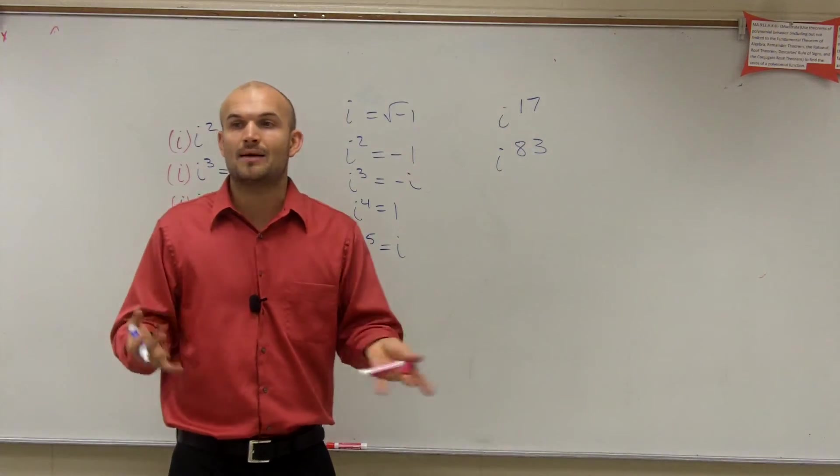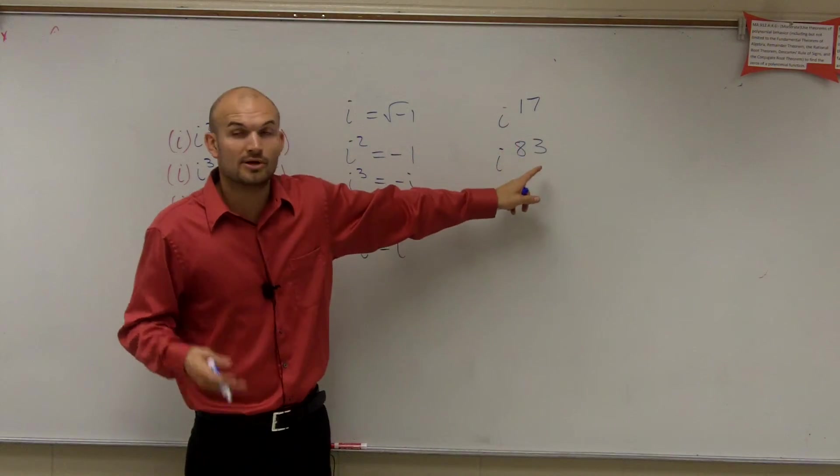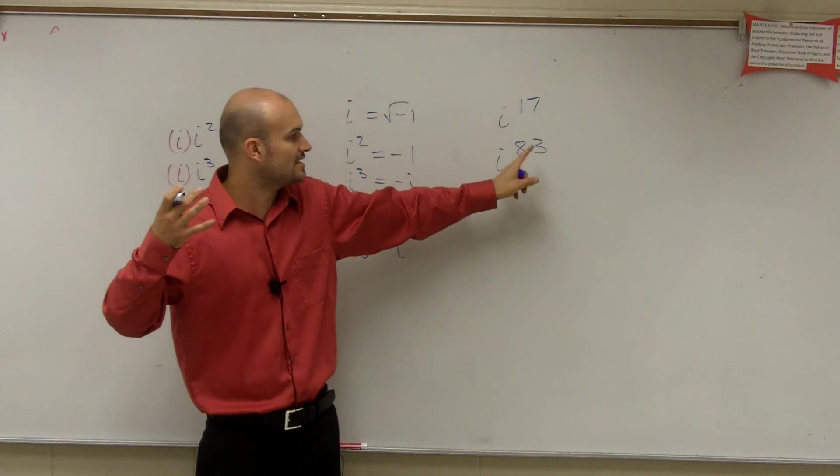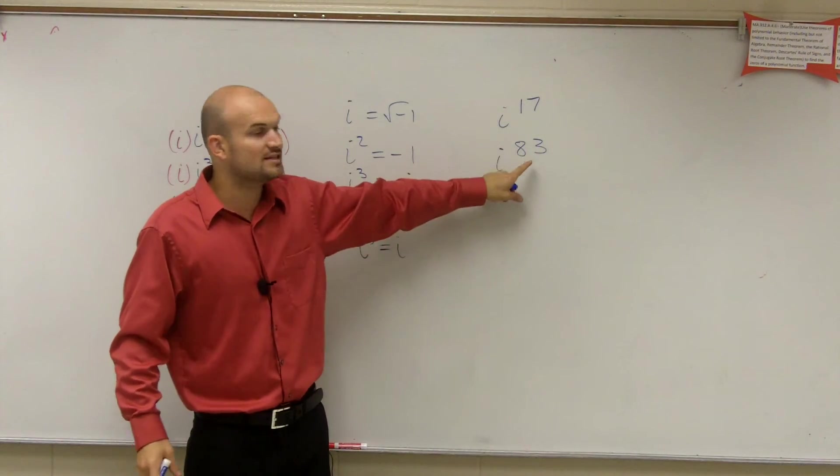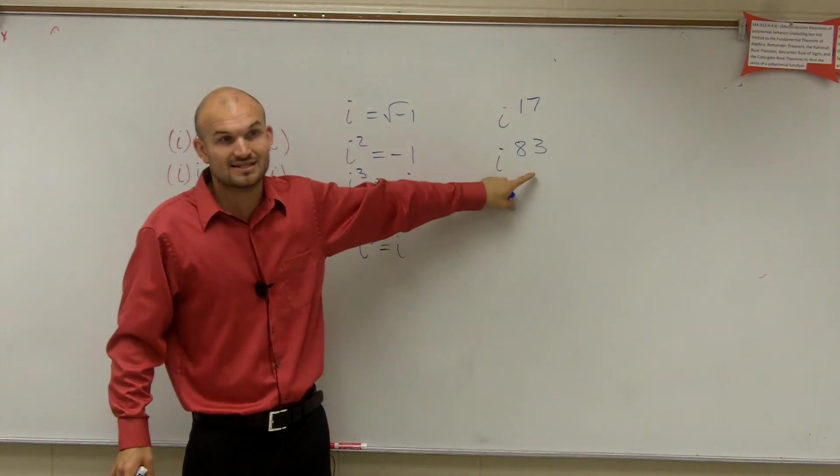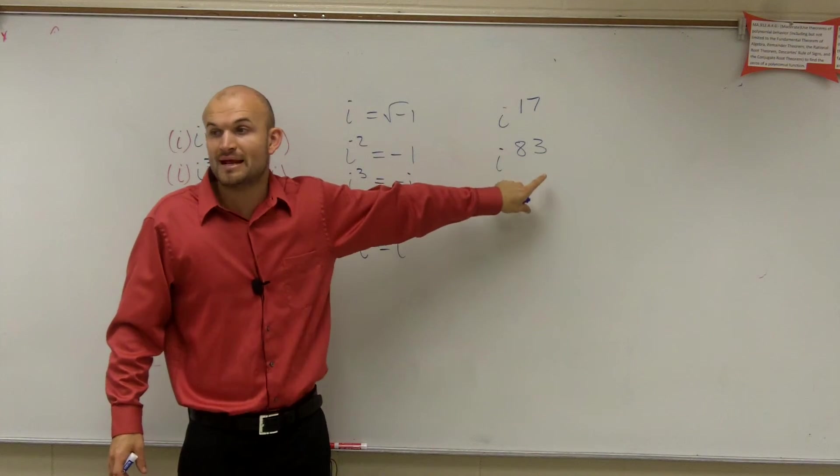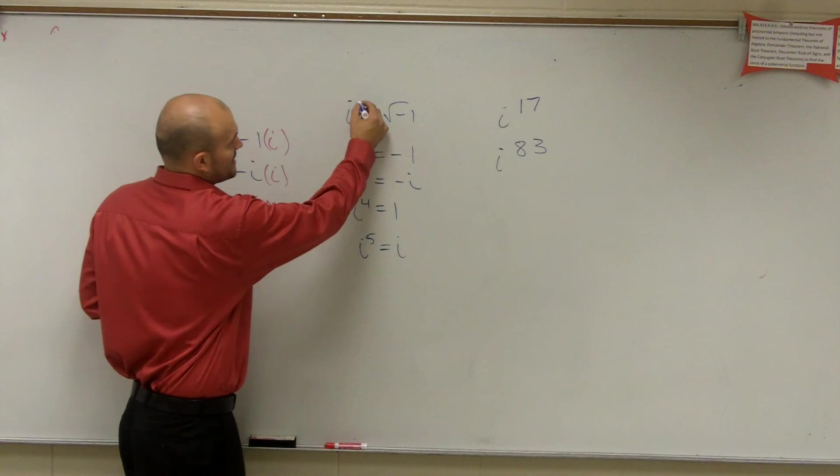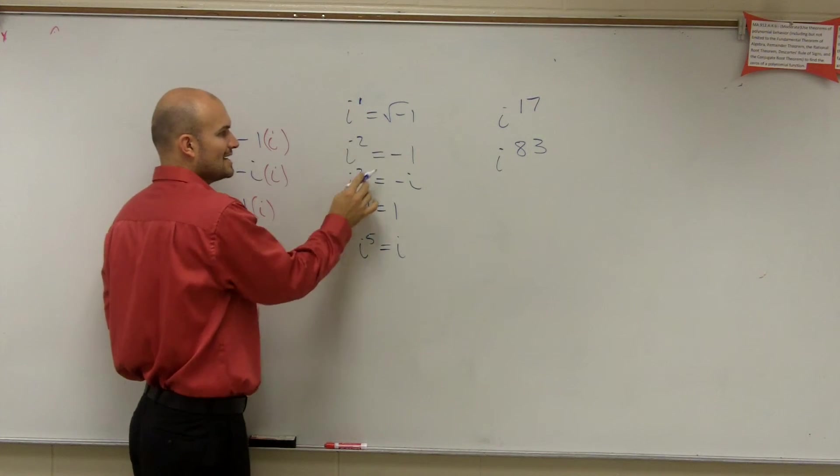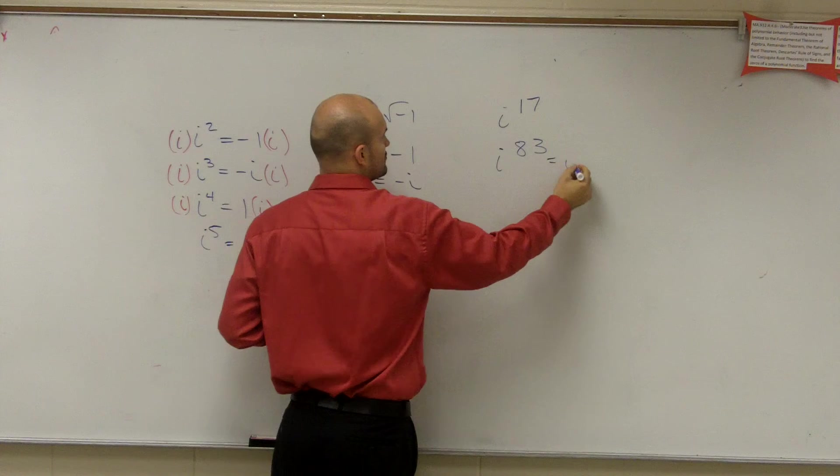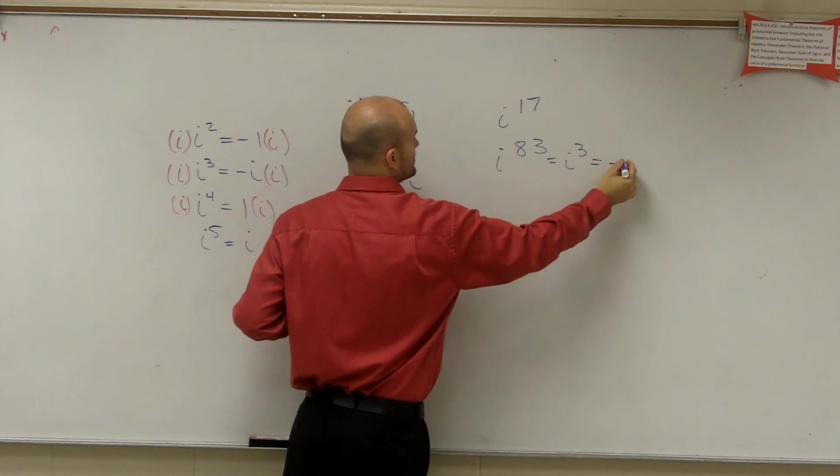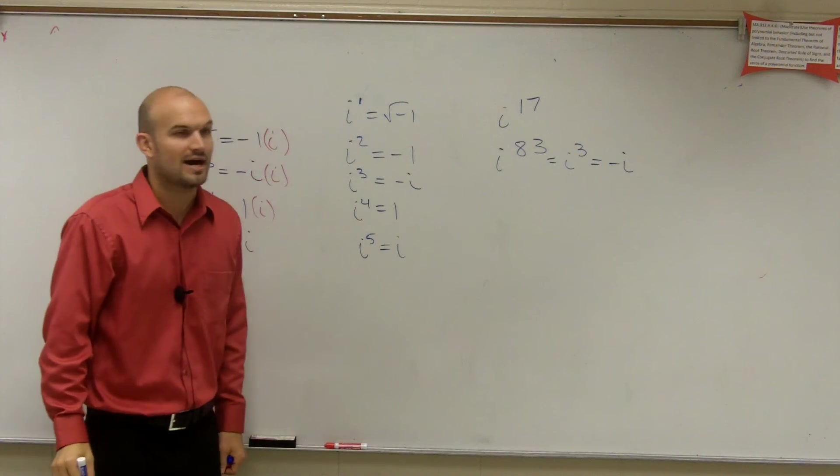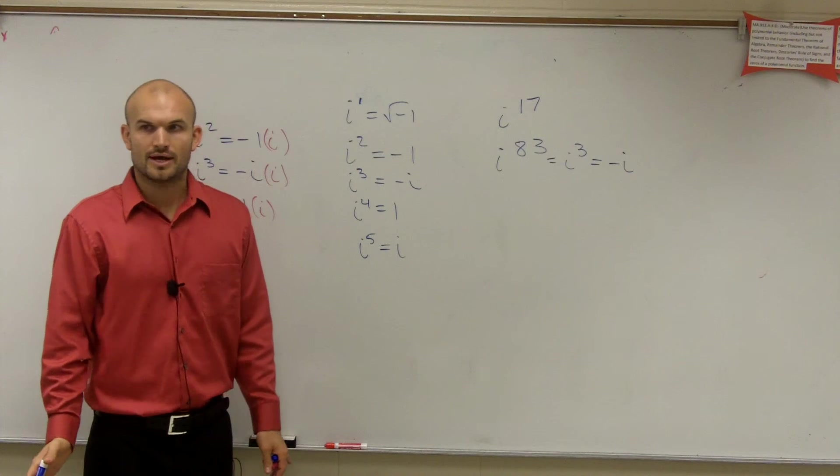You're not really considering, you don't really care how many times 4 divides into it, but you're interested in, does 4 evenly divide into 83? And no, it divides into 80. So therefore, is there a remainder of what? 3. So i to the 83rd is equivalent to i to the 3rd, which is equivalent to negative i.